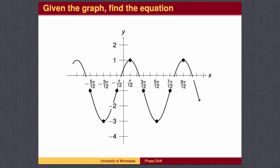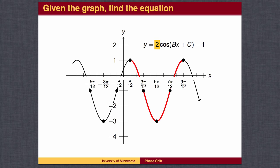Now let's go backward. Given the graph, can we find an equation? First, we need to decide on the general form. Perhaps we can choose a section that looks like a standard cosine wave. The middle points are at a height of negative 1, so d is negative 1. The graph hits its peak at 1 and its valley at negative 3, a total distance of 4, so the amplitude is 2. The period is determined by b: one full wave begins at pi over 12 and ends at 9 pi over 12, for a wavelength of 8 pi over 12, giving 2 pi over b equals 8 pi over 12, so b equals 3.